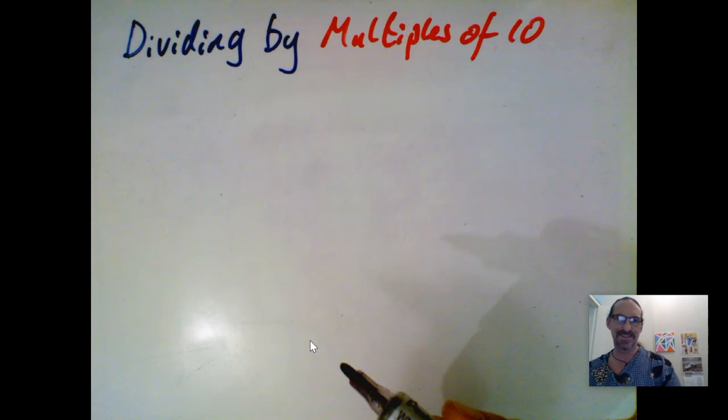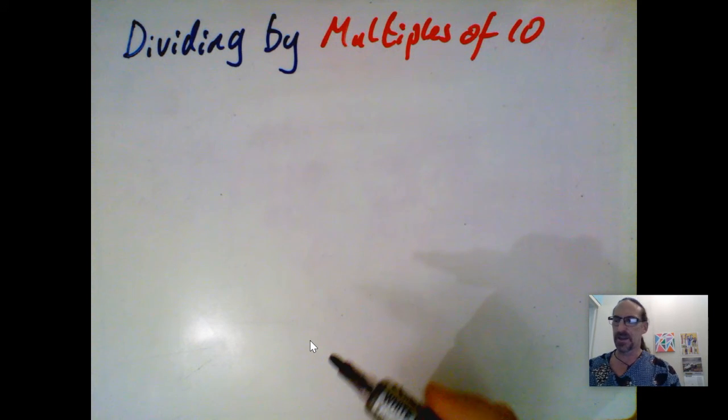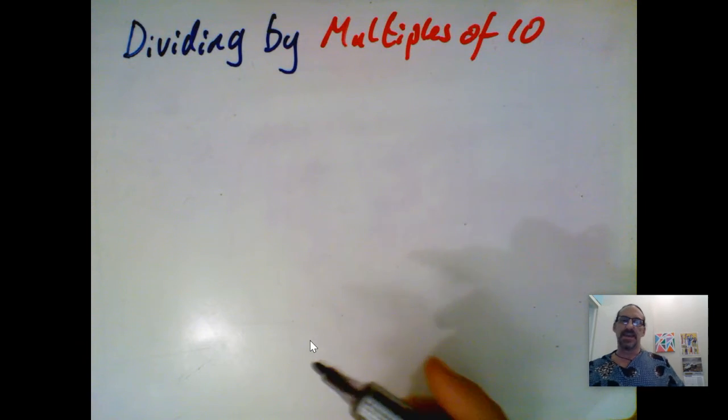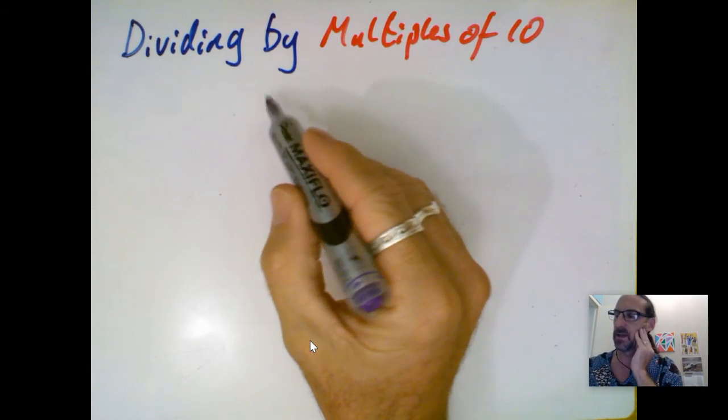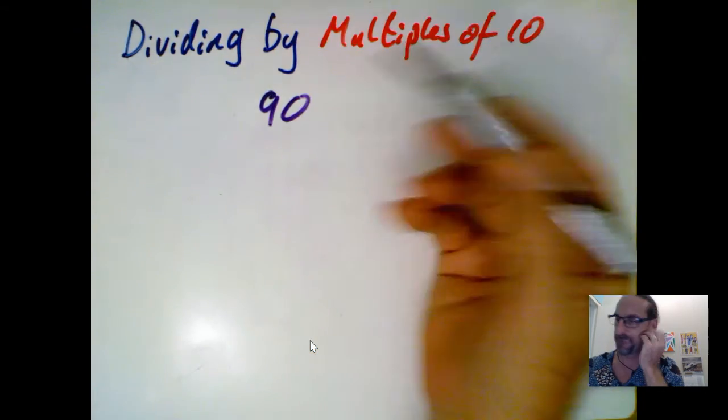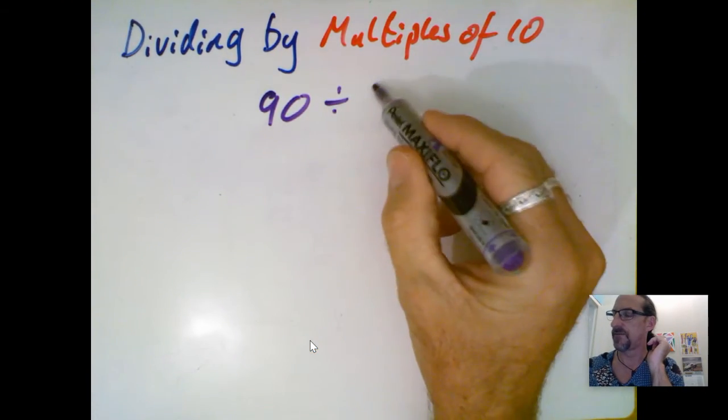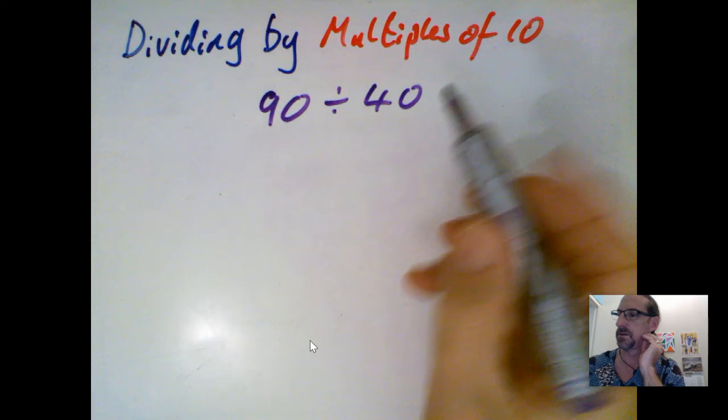Welcome back to Mr. Nat's Maths, and today we're going to look at dividing by multiples of 10. Let's take an example like 90 divided by 40 to start with.